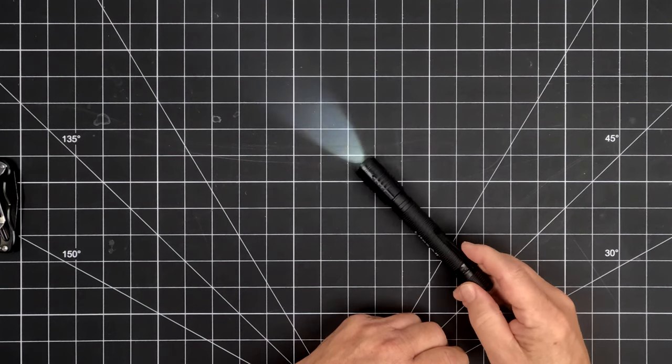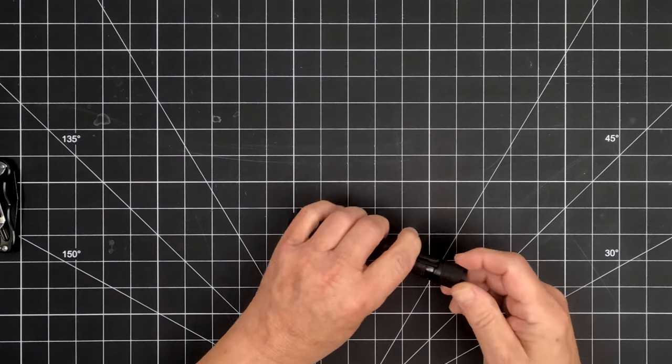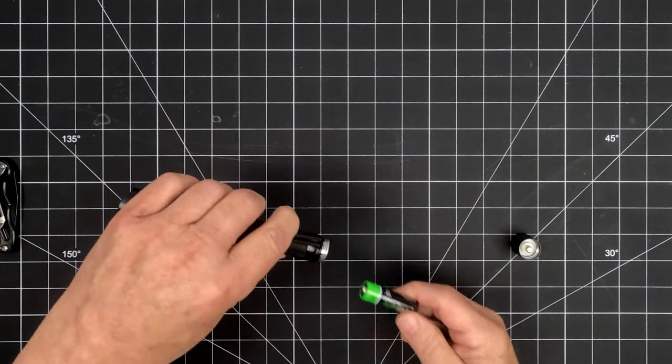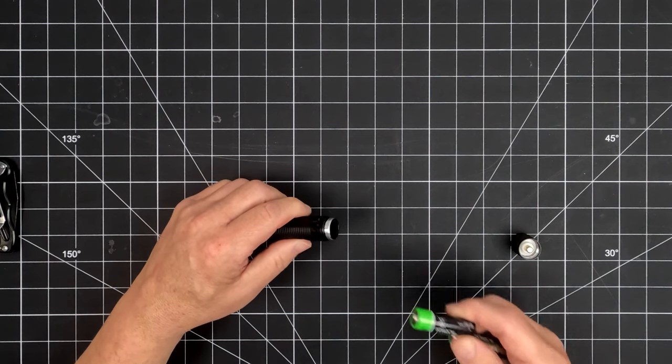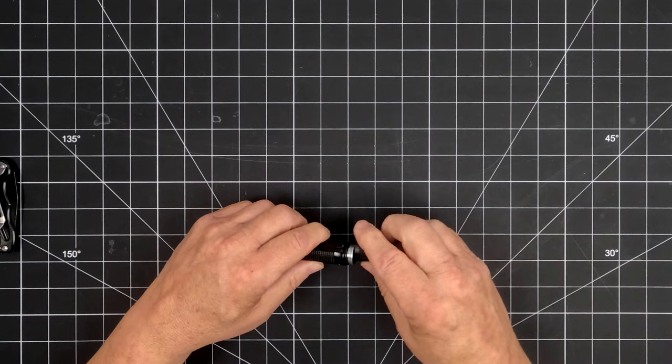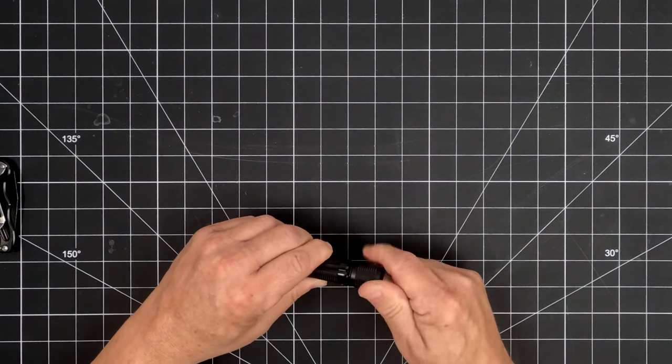The light is powered by two AA batteries, which are included. To replace them, unscrew the battery compartment cap and slide out the expired batteries. Replace them with two alkaline AA batteries for best performance and screw the cap back on securely.